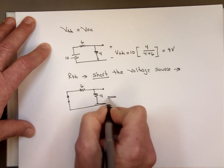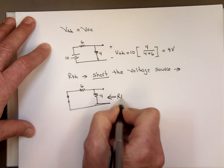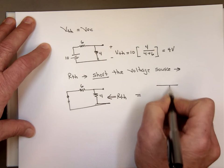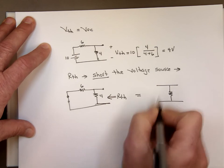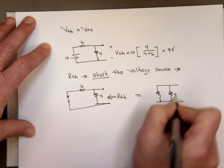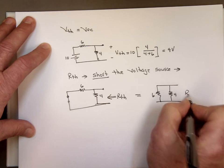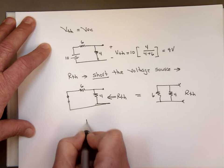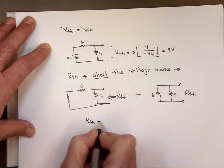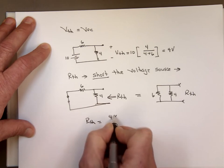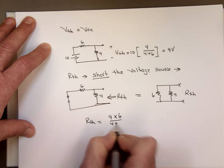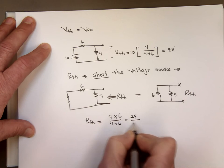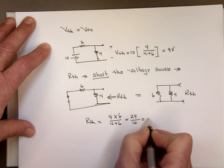And looking back this way, what is R thevenin? So if you look at that, you can see there are two resistors in parallel. This is 4, and this is 6, and this is R thevenin. And R thevenin equals the product over the sum, 4 times 6 is 24 divided by 10, which equals 2.4.